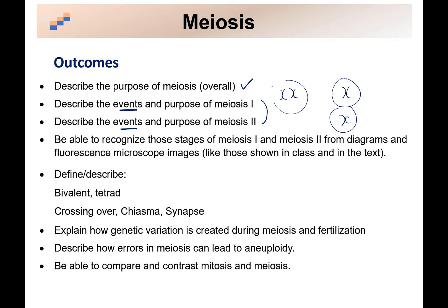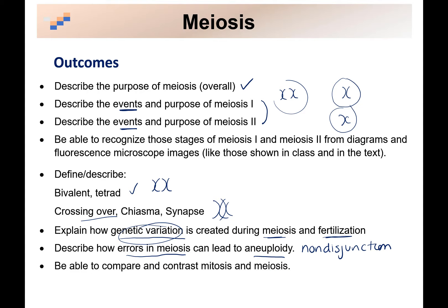Be able to recognize those stages from diagrams. We've talked about bivalent and tetrads — that's when your homologous pairs come together. Crossing over, chiasma, synapsis — that's where we're getting genetic exchange. Genetic exchange or crossing over is how genetic variation happens. Fertilization also contributes to genetic variation, because any egg has the potential to be fertilized by any sperm, so you can get any combination of alleles in your gametes. Errors in meiosis are non-disjunction; aneuploidy means you have a different number of chromosomes than the wild type.